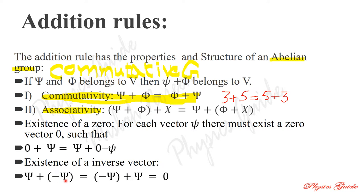For example, vector A equals 3i plus 5j, and vector B equals 5i plus 3j. These are two commutative vectors. We can add them and get the same answer in both orders.